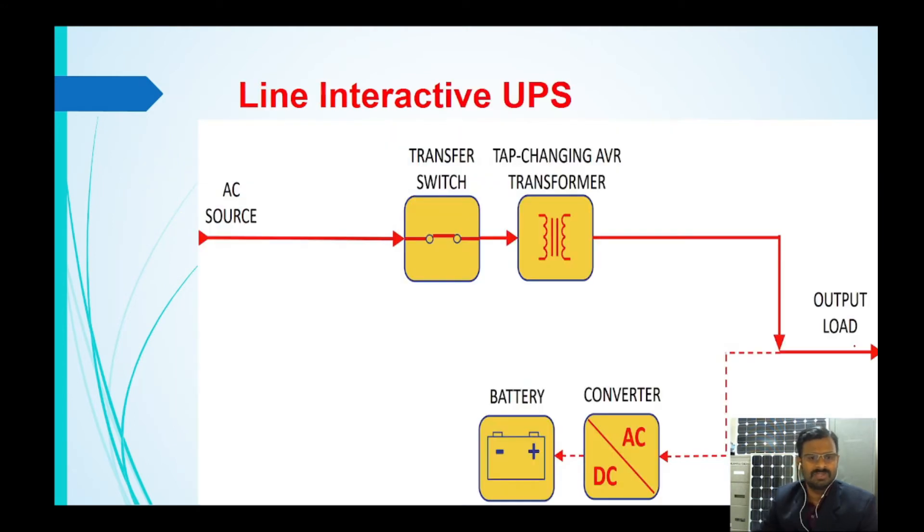How does this line interactive UPS function? When the utility power is there and the transfer switch is closed, the power is being transferred to the load through the transformer. Also a certain amount of power is given to the AC to DC converter and it goes to the battery to charge the battery.